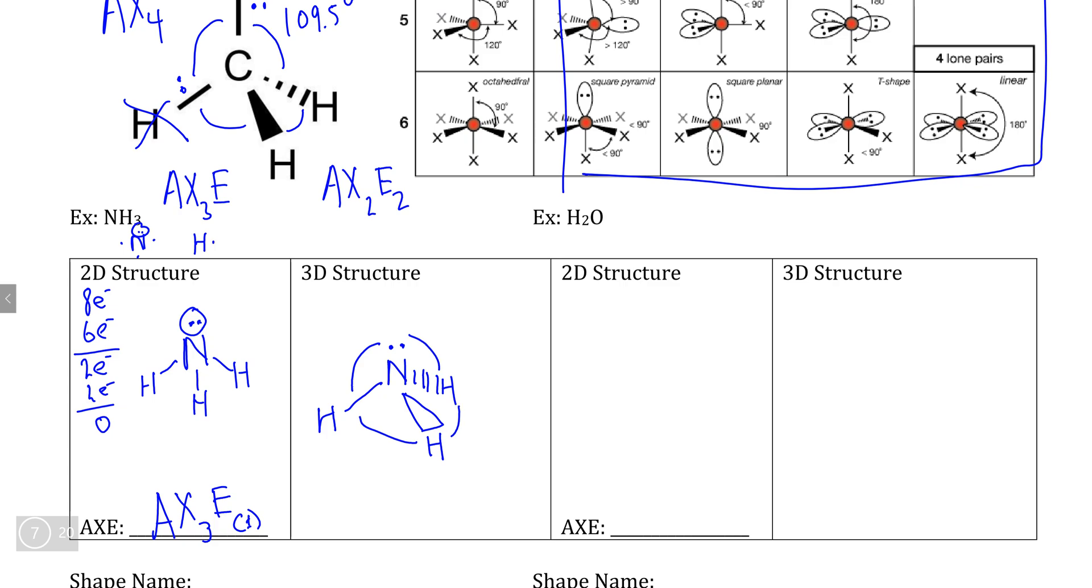Likewise, we can do the same thing when constructing the 3D structure of water. So if we draw the 2D Lewis structure, I don't think I really need to bother, because I'm pretty sure everyone knows how to draw the 2D Lewis structure of water right now. If not, there is.